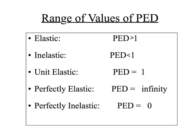Well, there are five different values. The range of values of price elasticity of demand. The first value is elastic. The second is inelastic. The third is unit elastic. The fourth is a situation that's actually theoretical, but it's important to understand: perfectly elastic and perfectly inelastic.